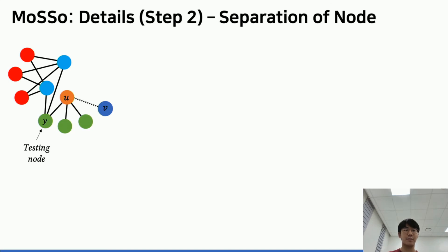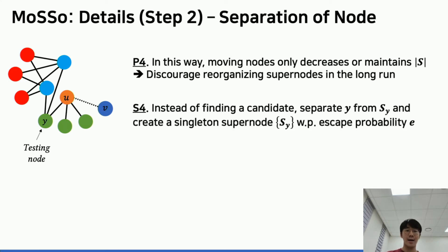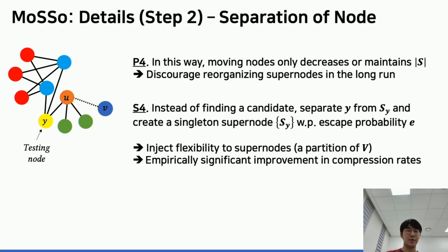So far, we addressed apparent issues, but we spot an underlying obstacle to achieving good performance. In this way, moving nodes into another super node only decreases or maintains the number of super nodes. So in the long run, it's less likely to reorganize super nodes for better compression. Hence, instead of always finding a candidate, we inject flexibility by separating the testing node as a new singleton super node with some fixed probability. We empirically observe that this particular move leads to significant improvement.